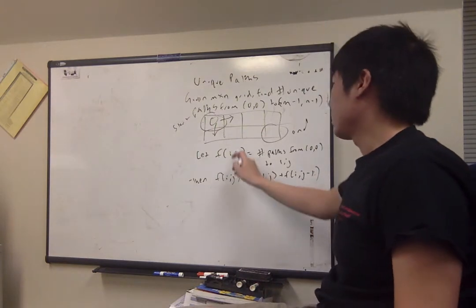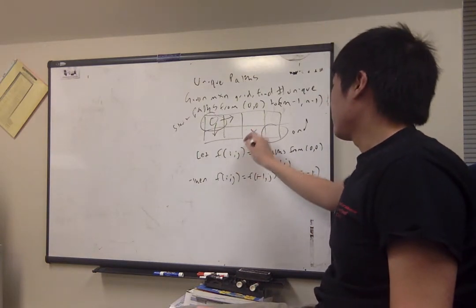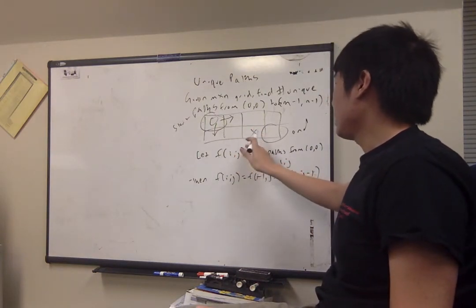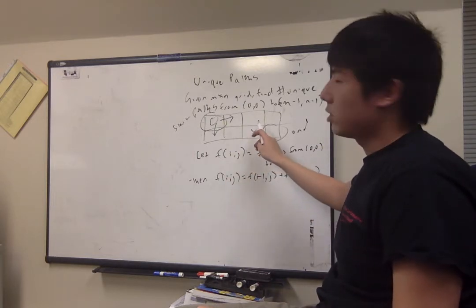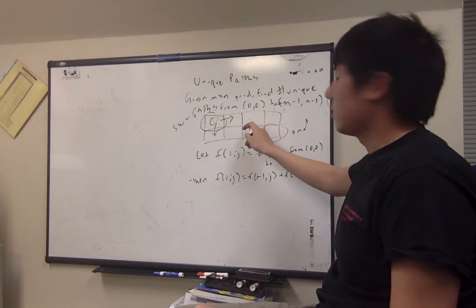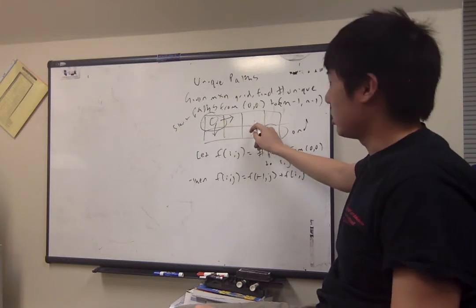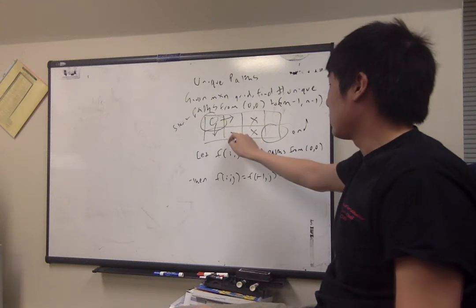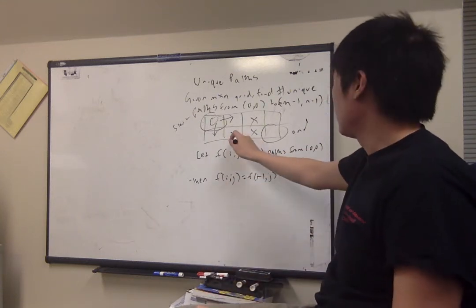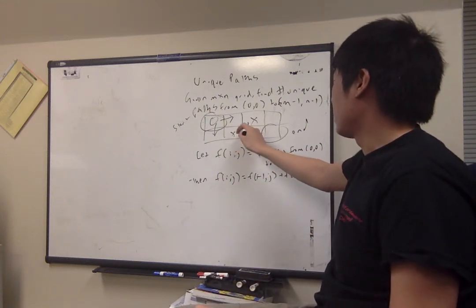And why does that make sense? It's because at any given location in the grid, the number of paths to that location is going to be the sum of the number of paths to the location just above that point and just to the left of that point, because you can only go to the right or down.